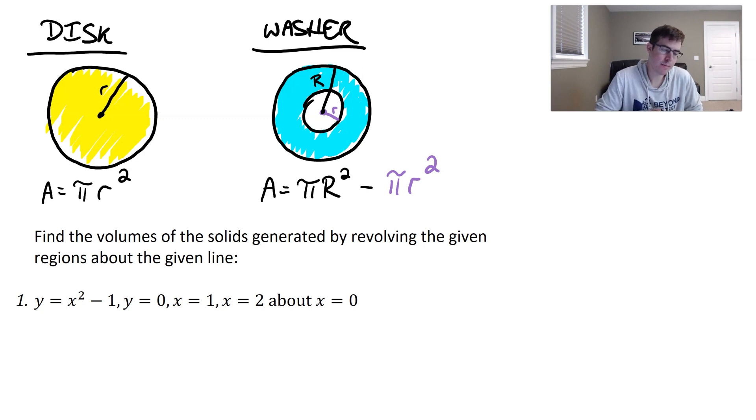It says y equals x squared minus one, y equals zero, x equals one, and x equals two. Those are our bounds, and we're going to rotate that region about the line x equals zero.